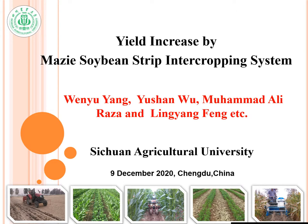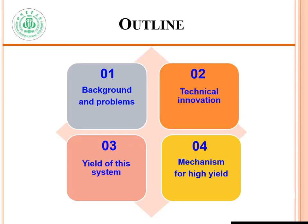Hello everyone, welcome to my presentation. The topic of my PPT is yield increase by maize-soybean strip intercropping system. This presentation has four main parts: first, the problems and backgrounds; second, the technical innovation of the system; third, the yield of the system; and fourth, mechanisms for high yield.